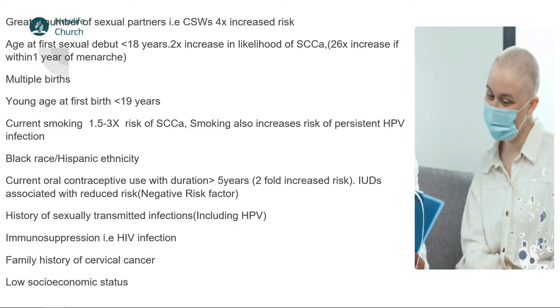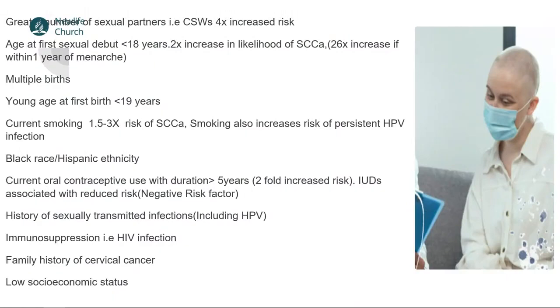Menarche is the first period that a lady has. So if a lady has coitus within one year of menarche, there is a 26-fold increased risk of acquiring cervical cancer and HPV. Another risk factor is multiple births, as this correlates with increased coital activity and thus increased exposure to HPV. Childbirth below age 19 is also a risk factor — we currently have massive drives to prevent teenage pregnancies. Current smoking increases your risk by one and a half to three times.